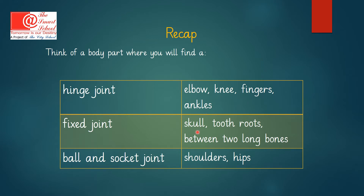Fixed Joints are present in your Skull and between two Long Bones. Ball and Socket Joints are present in your Shoulders and your Hips.